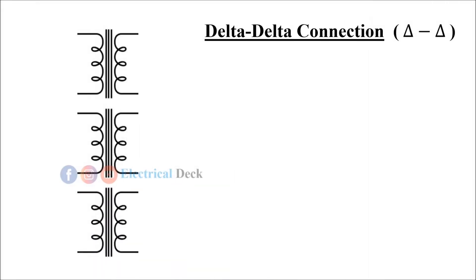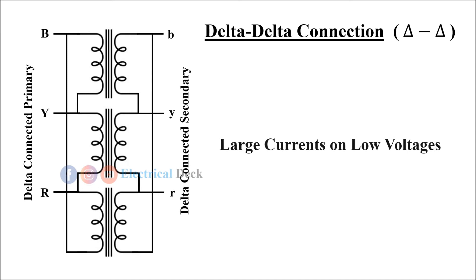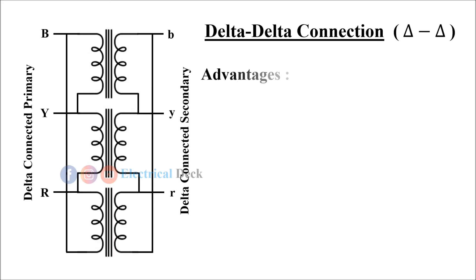In delta-to-delta connection of a three-phase transformer, both the primary and secondary three-phase windings are connected in delta. This type of connection is most economical for systems that carry large currents on low voltages.